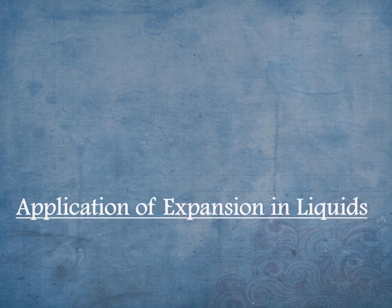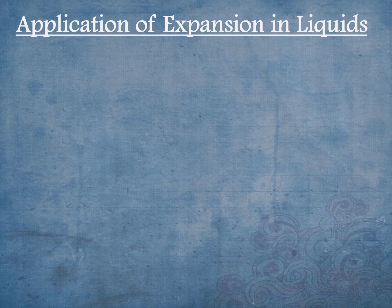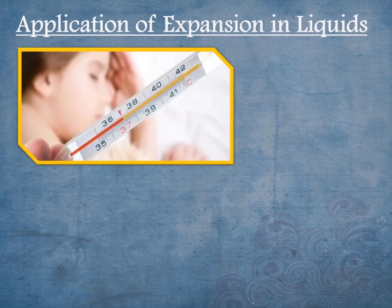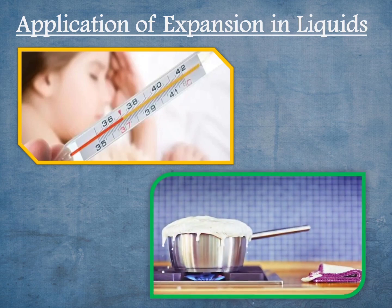Application of Expansion in Liquids. First, when a clinical thermometer is kept in contact with a hot body, the mercury inside it expands and rises. The new level of mercury indicates the temperature of the body. Second, while heating liquids such as milk, they overflow. So the containers are not filled up to the brim — the empty part of the container gives free space for the liquid to expand.